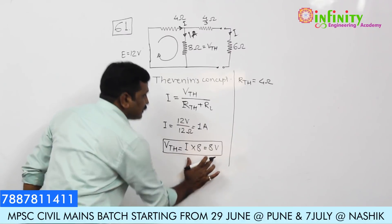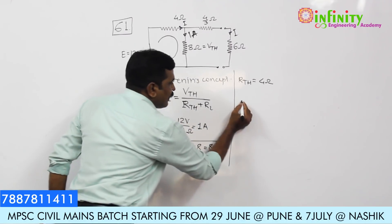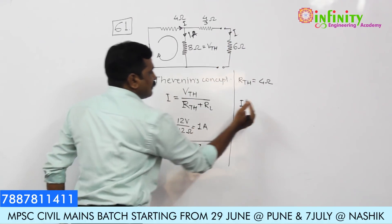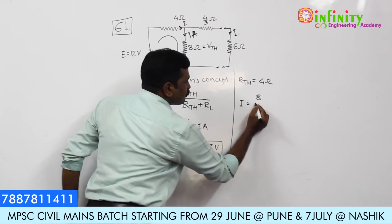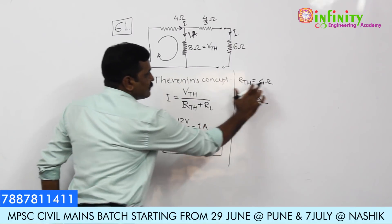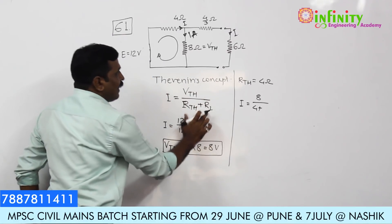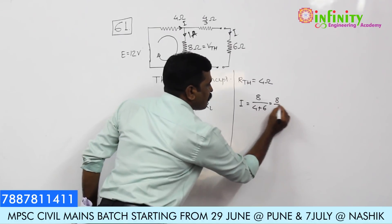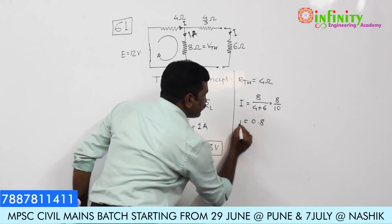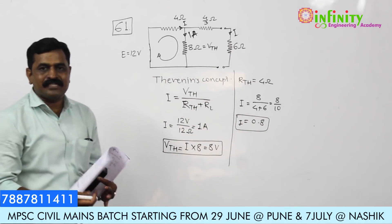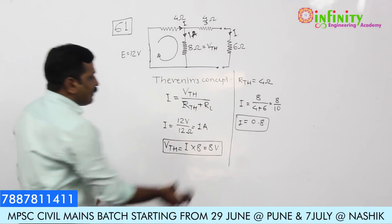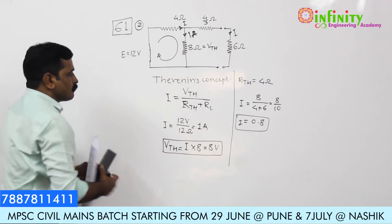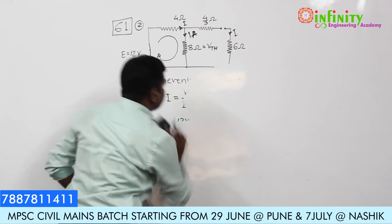Putting the values of Vth and Rth into the equation, the current through the 6 ohm resistance is Vth divided by (Rth plus RL), which is 8 divided by (4 plus 6), giving 8 by 10, that is 0.8 ampere. This is the answer for question 61, and the correct answer is option 2.